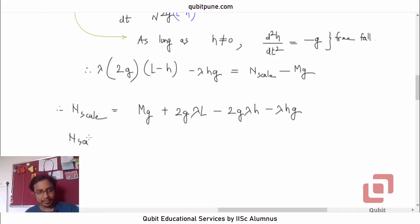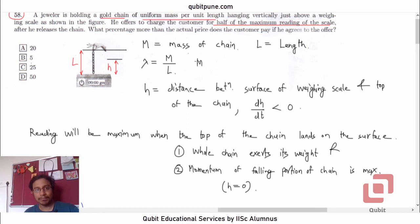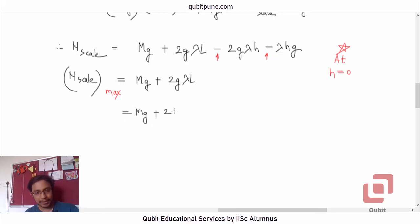We want N_scale to be maximum. When will this be maximum? This will be maximum when both these terms which carry the negative sign become minimum. That is possible only when h is 0. When h equals 0, it will be mg plus 2g lambda l. But what is lambda l? Lambda is m/l, so lambda l must be m. So it is 2g times m. That is 3mg.